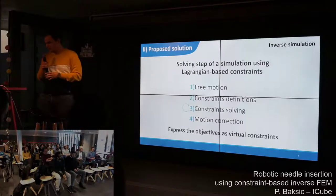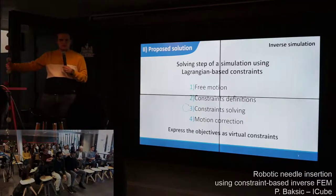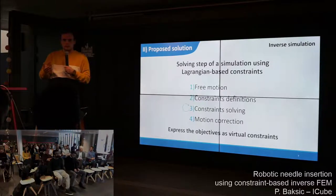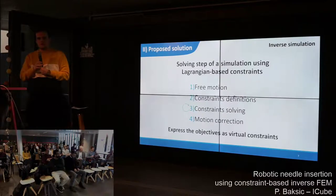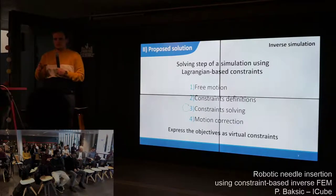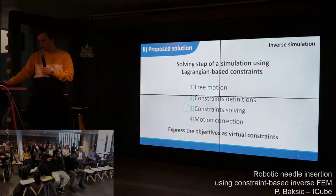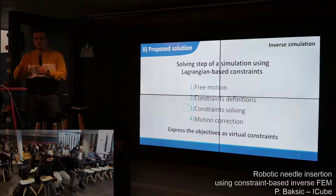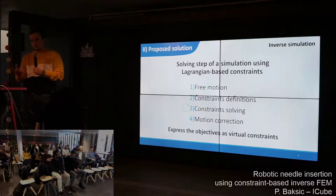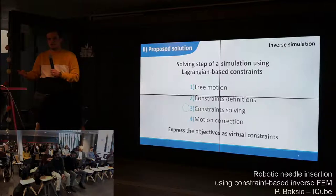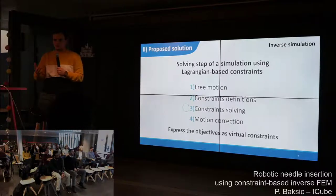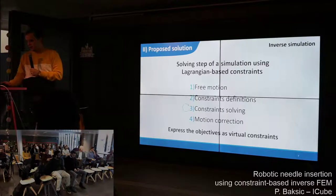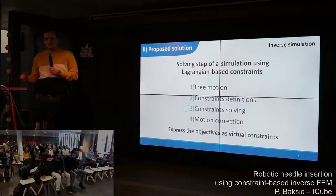These are the four main steps of simulation resolution of a time step using Lagrangian multipliers. There is many steps involved. There is the free motion first, which solves the whole program without taking into account the constraints. Then the constraint definition, which is matrix construction. It takes a lot of time but is necessary. Then there is constraint solving, which is an iterative step.